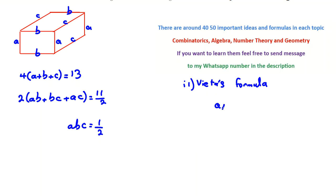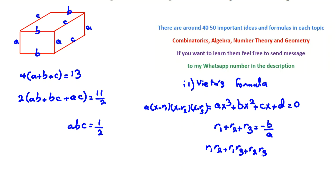If you have ax³ + bx² + cx + d = 0, and the roots are r₁, r₂, r₃, then by Vieta's formula: r₁ + r₂ + r₃ = -b/a, r₁r₂ + r₁r₃ + r₂r₃ = c/a, and r₁r₂r₃ = -d/a.